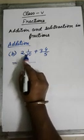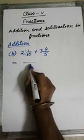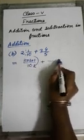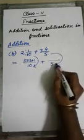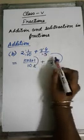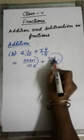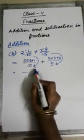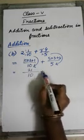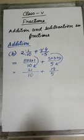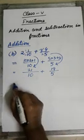Here, if I convert to improper fraction: for the first fraction the denominator is 10, so I write 2 into 10 plus 1. For the second fraction the denominator is 5, so I write 5 into 3 plus 4. That gives us 10 into 2 is 20 plus 1 is 21, and 5 into 3 is 15 plus 4 is 19.